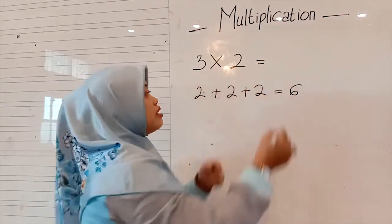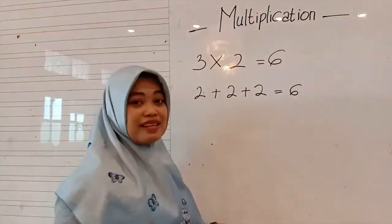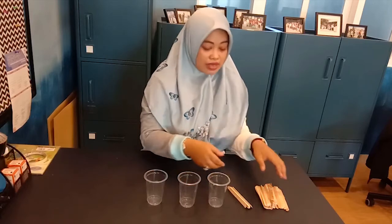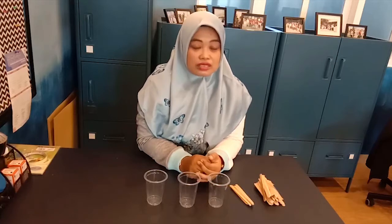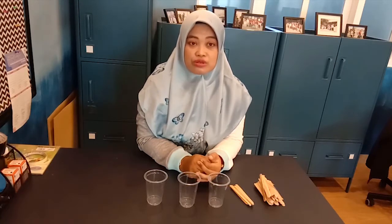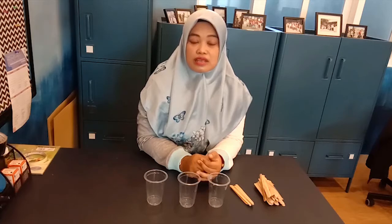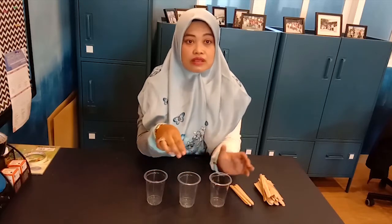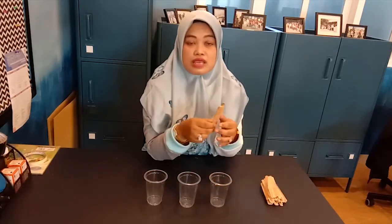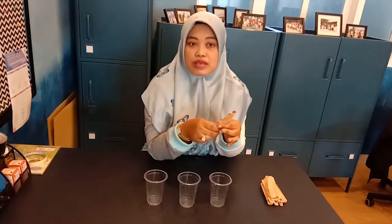Now let me give you an example for groups of. Here I have three plastic glasses and some ice cream sticks. For example, three times two is equivalent to — look at this: the number three means we prepare three plastic glasses, and we put ice cream sticks in each glass based on the second number.